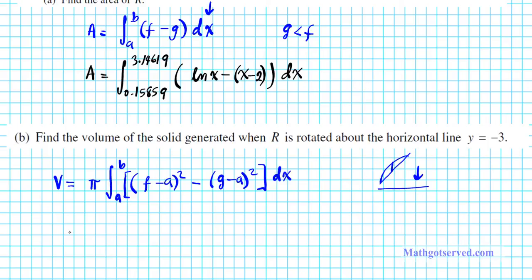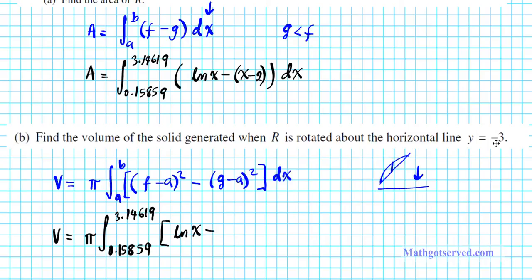So the volume, applying this formula to this situation, is equal to pi times — since we're using x's, we take the x-coordinates of the points of intersection, which we already have: 0.15859 and 3.14619. Then f, the function on top which is the logarithmic function, minus negative 3 — which becomes plus 3 — squared (that's your outer radius), minus g, the function on the bottom, x minus 2, minus negative 3 which becomes plus 3, quantity squared, dx.